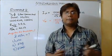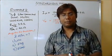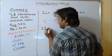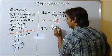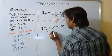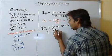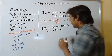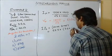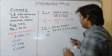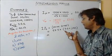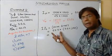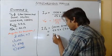Next, similar to the previous example, I find the armature impedance drop, which is I·Z_S. This equals the current 52.5 multiplied by Z_S = (3.5 + j40) ohms. Taking the magnitude — root of (3.5² + 40²) multiplied by 52.5 — gives the armature drop as 2100 volts.